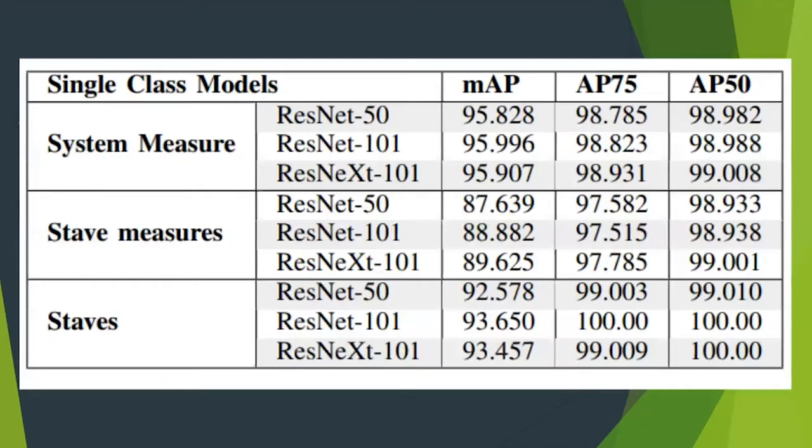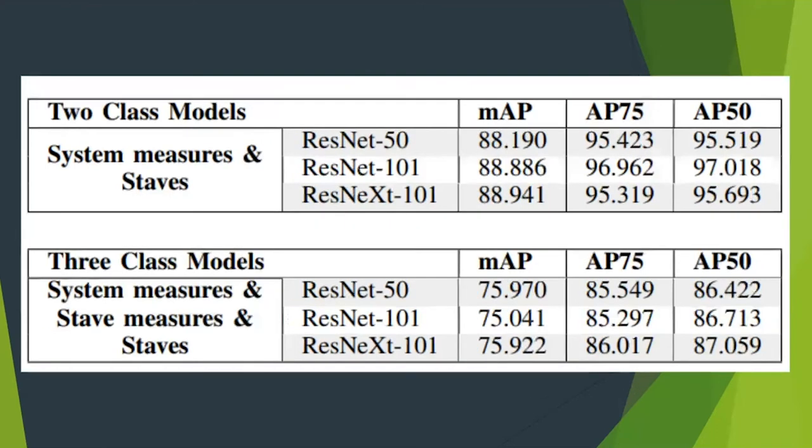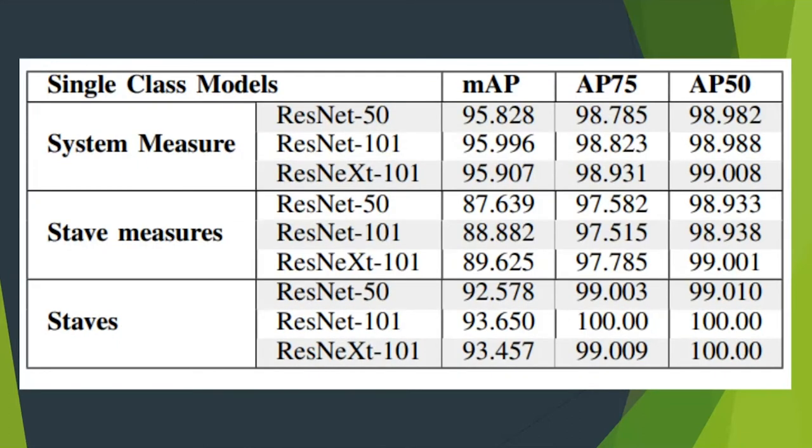For the results, I trained on three different categories with three different backbones: ResNet-50, ResNet-101, and ResNeXt-101, all provided from the Detectron 2 framework. You can see the average precisions are all close to or above 90% accuracy, which is remarkable. These are single class models, so I only trained for system measures, only for staff measures, and only for staves separately.